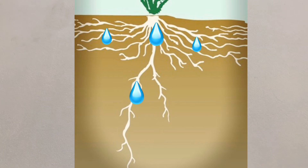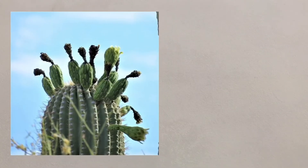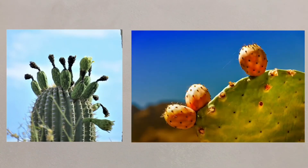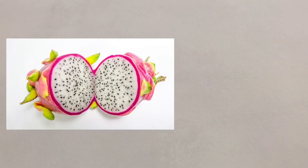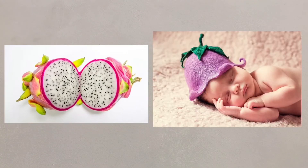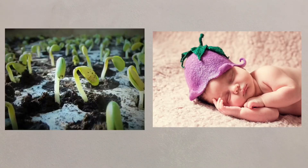Water can also be stored in these roots, as well as their stems, leaves or even their fruit. Seeds from these plants can remain dormant for many years, only germinating when there's any form of rain.